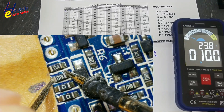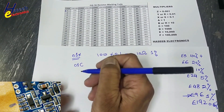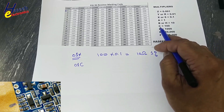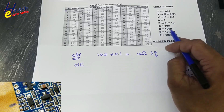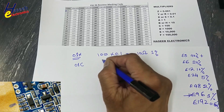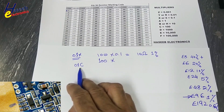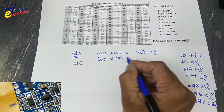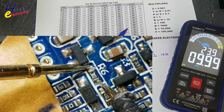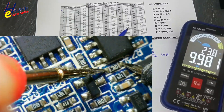Let's check the resistor value for 01X — it is exactly 10 ohms. Now for 01C: look up 01 in the table, the base value is 100, then multiply by C which equals 100. That means 100 × 100 = 10,000 ohms, or 10K. Measuring on the multimeter confirms 9.99K — that's 10K. Multiple 01C resistors are also reading 10K, 10K, 10K, and 9.98K.